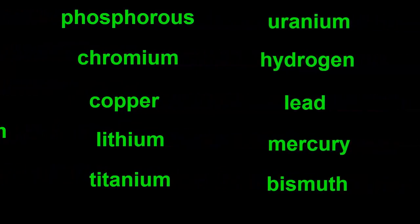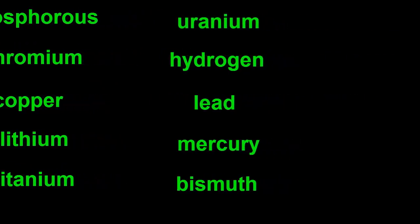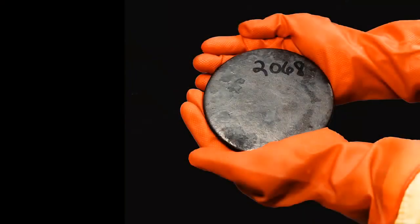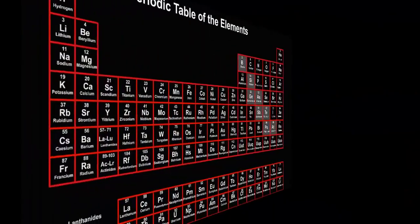Fortunately, there's a list showing all the elements. It starts with the element with the lightest atoms, hydrogen, and goes to the element with the heaviest atoms, uranium. This list is called the periodic table.